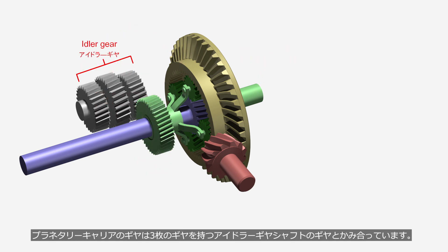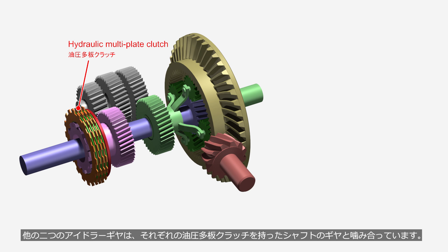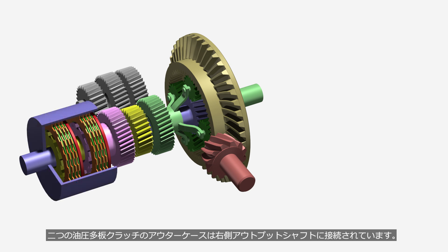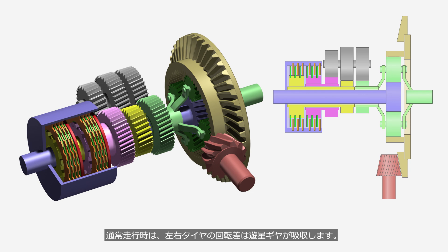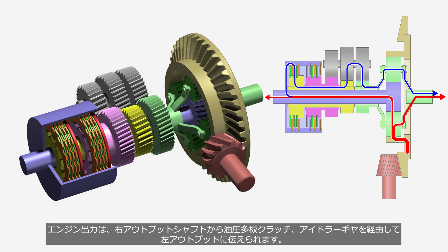The planetary carrier's gear meshes with the gear on the idler gear shaft, which has three gears. The other two idler gears mesh with the gears on shafts, each equipped with a hydraulic multi-plate clutch. The outer cases of the two hydraulic multi-plate clutches are connected to the right output shaft. During normal driving, the rotational difference between the left and right tires is absorbed by the planetary gear set. During right cornering, to increase the torque on the left-side tire, the system engages a hydraulic multi-plate clutch, transmitting engine power from the right output shaft to the left output shaft via the hydraulic multi-plate clutch and idler gear.